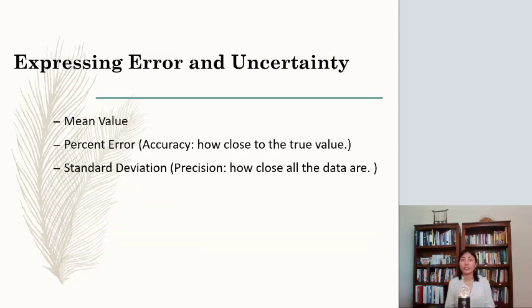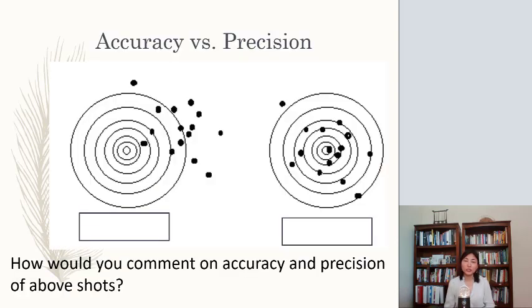Now we have learned how to get the mean value. What is the percent error? It's basically describing accuracy, how close to the true value. And we talked about standard deviation, which is talking about precision, how close all the data are. Here is the shoot the target analogy. And it can tell you the concept of accuracy and precision very clearly.